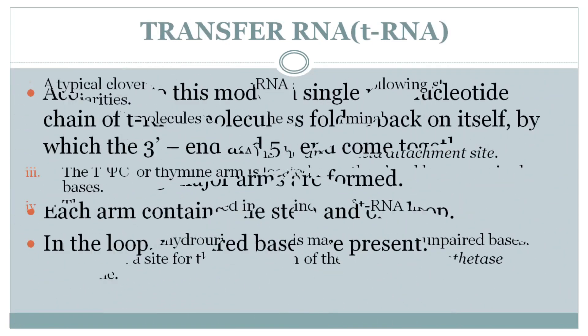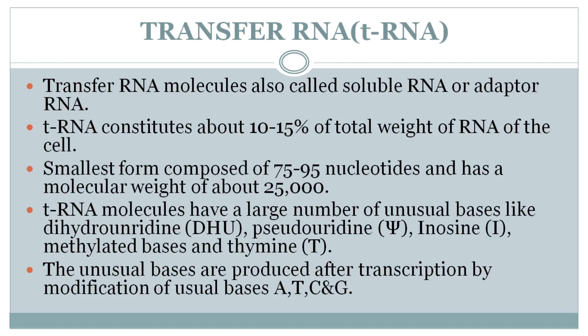tRNA molecules contain a large number of unusual bases like dihydrouridine, pseudouridine, inosine, methylated bases, and thymine. Pseudouridine is formed when ribose sugar is attached to uracil via carbon C1 to C5 instead of the normal nitrogen. These unusual bases are produced after transcription by modification of usual bases.